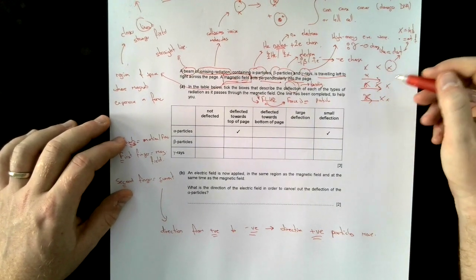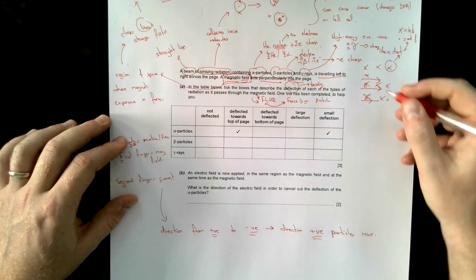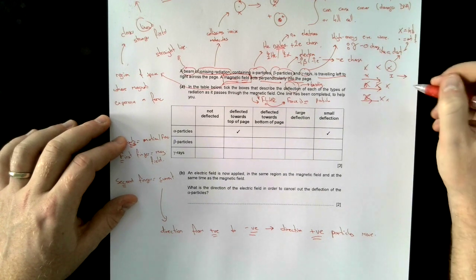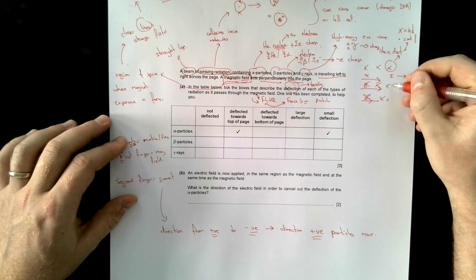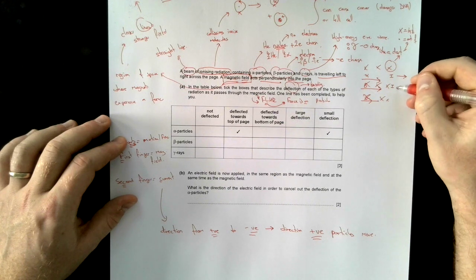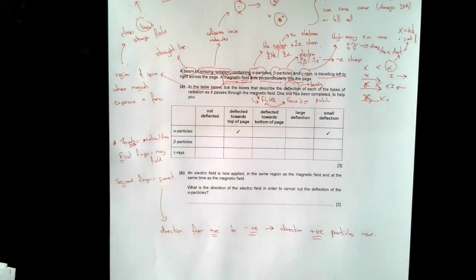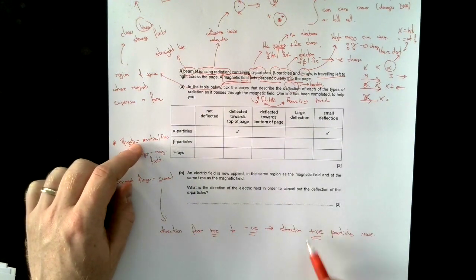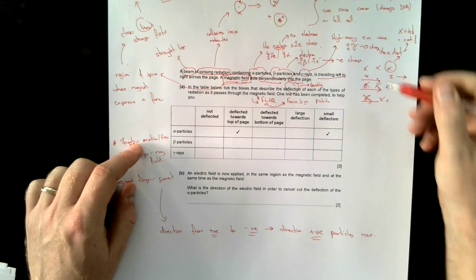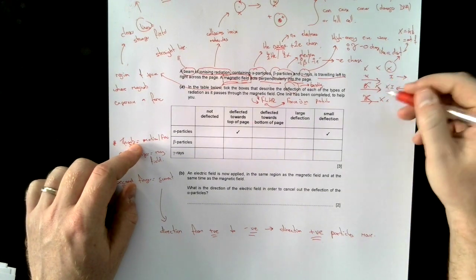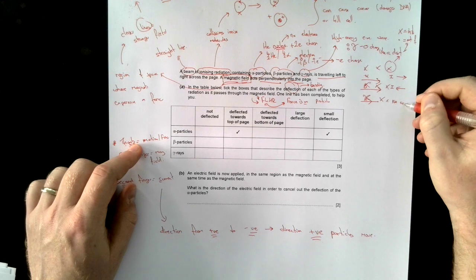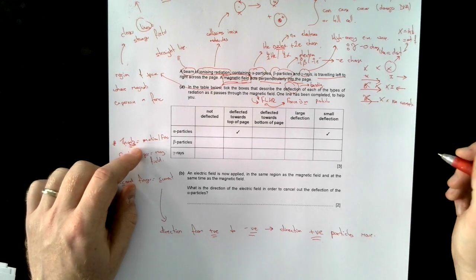So when I come back to this diagram, if I'm thinking about this, the alpha, the current for alpha is going left to right. The current for beta will be going right to left, even though the particles themselves are moving left to right. Because the direction of current is always the direction that positive particles move. For the beta particles, they're going to move the other way. And then for my gamma, there is no current because it's uncharged.